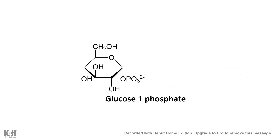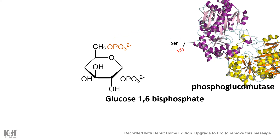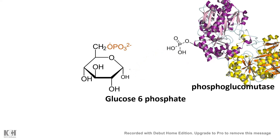Once glucose residues are released as glucose-1-phosphate, phosphoglucomutase converts glucose-1-phosphate into glucose-6-phosphate. Phosphoglucomutase has a phosphate group that receives a nucleophilic attack from the oxygen on carbon-6 of glucose-1-phosphate, forming a transient intermediate — glucose-1,6-bisphosphate — and converting the phosphoserine residue at the catalytic site to a serine residue. A further nucleophilic attack on carbon-1 then converts this intermediate to glucose-6-phosphate.